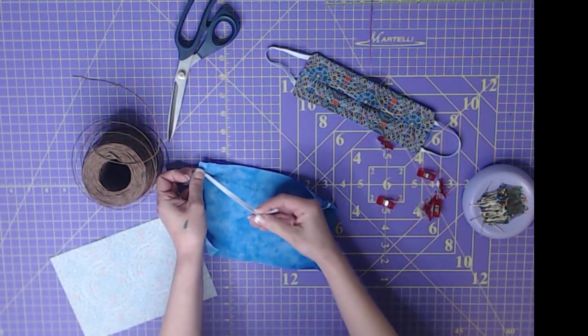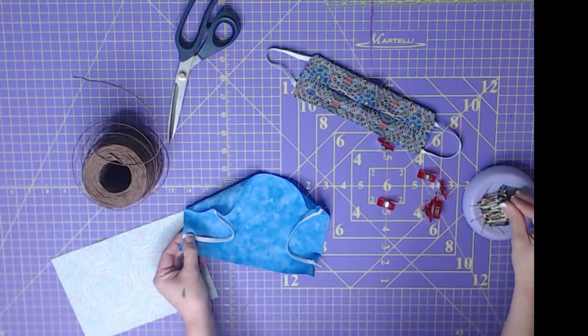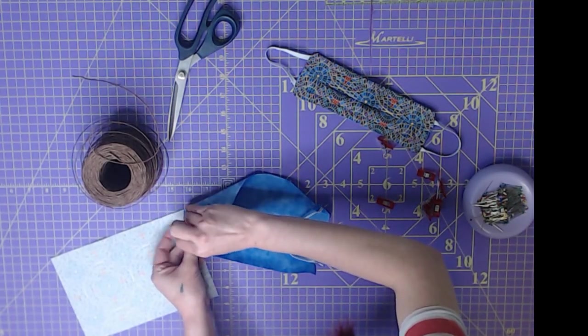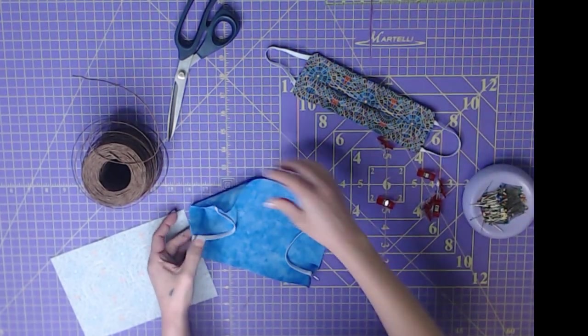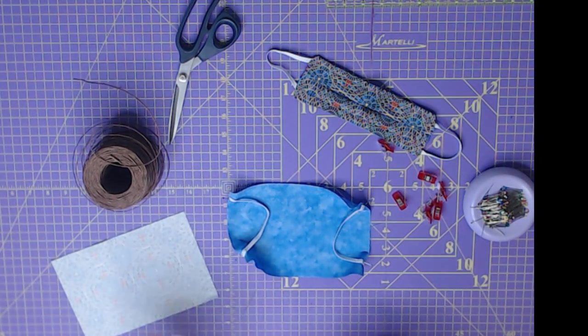And then we're going to take this, spin it around down here, a half of an inch to three quarters of an inch from the top, and put a pin in it. And again, it's going to bunch up. That is perfectly fine.